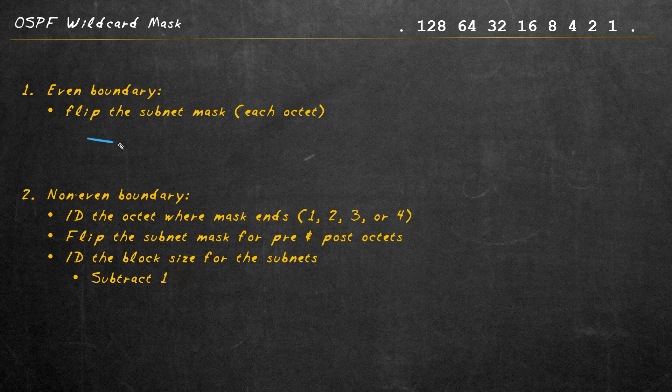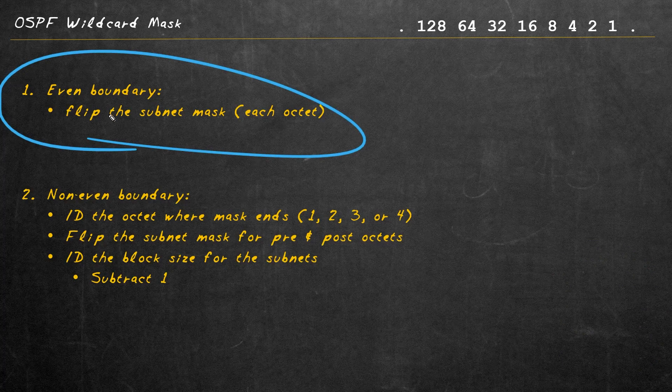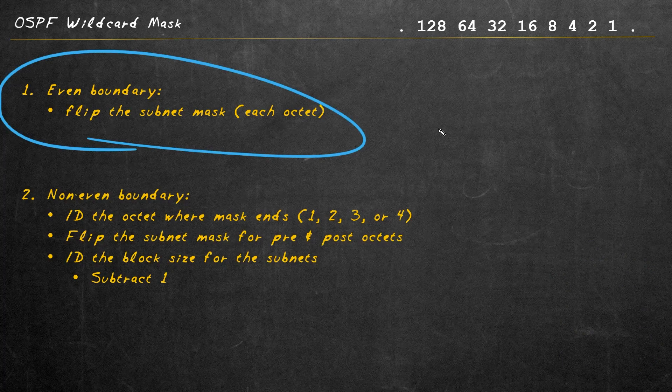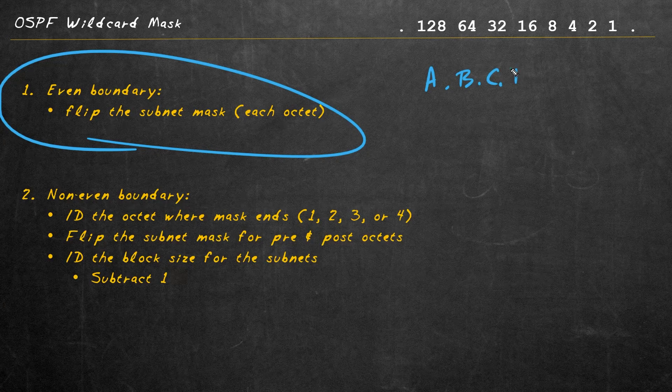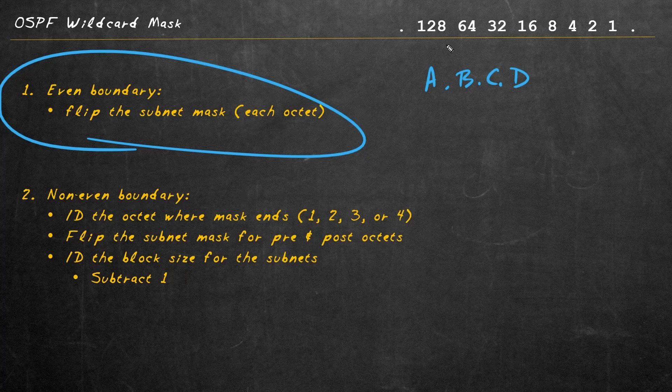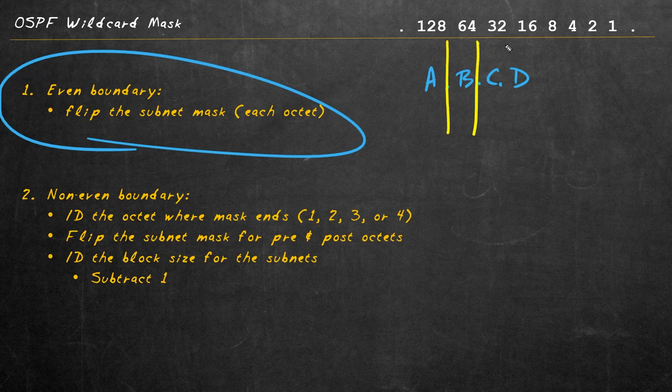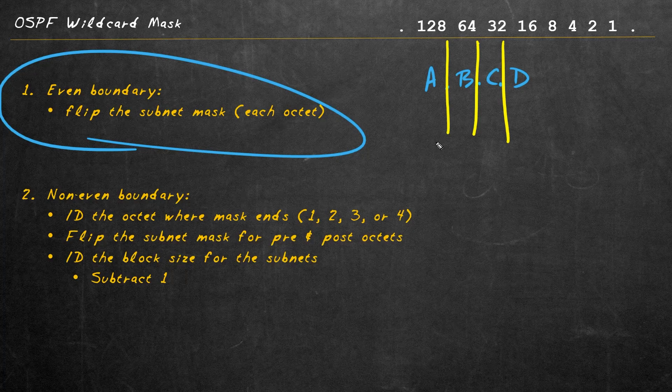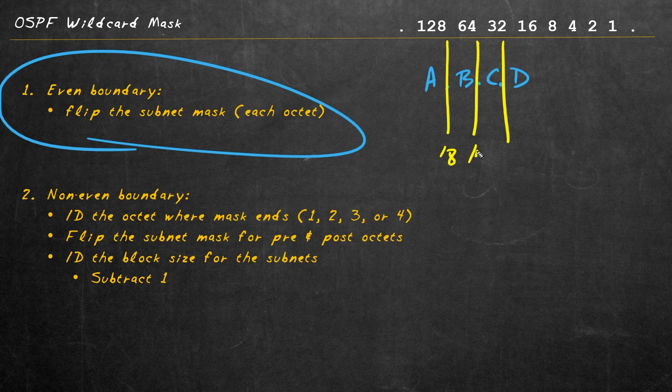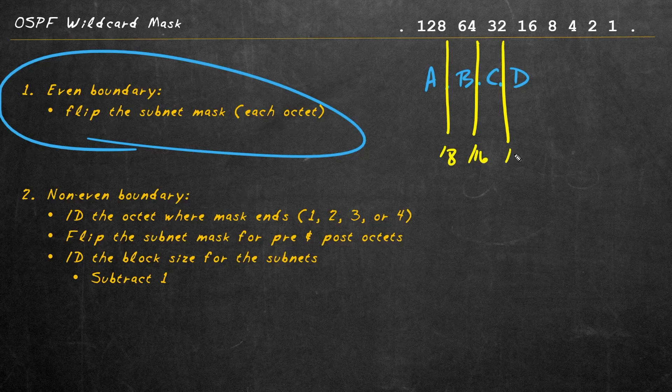Let's begin with the first scenario right here. This is when we have a network that is on an even boundary. In an IPv4 address, we've got four octets: the first one, the second one, the third one, and the fourth one. If we have a mask that evenly divides it either here or here or here, that's an example of an even boundary. In the case of this dividing line, that'd be a slash 8, this would be a slash 16, and this would be an example of a slash 24.